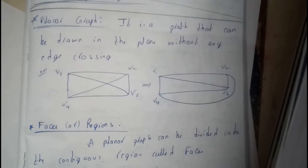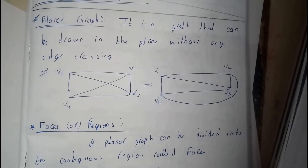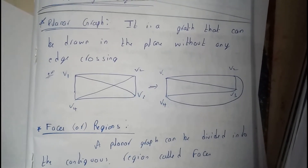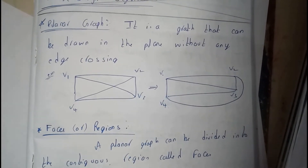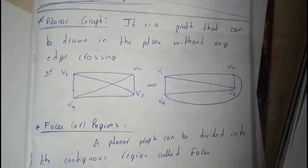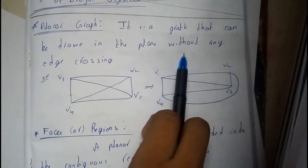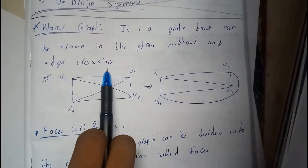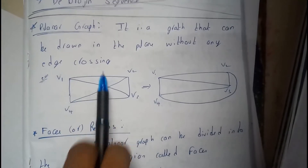Hello guys, in this tutorial let's see what is a planar graph. A planar graph is said to be a graph in which you will not be finding any edges crossing each other.